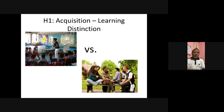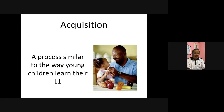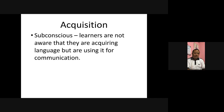On the other hand, when you learn to ride a bike, you don't really learn it — you acquire it. And once you've acquired it, you have it for the rest of your life. Acquisition is a process similar to the way young children learn their first language. There are no rules; it's all about communication. Acquisition is subconscious — learners are not aware that they are acquiring language, but are using it for communication.